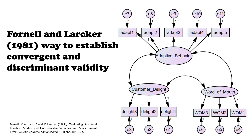Let's look at a simple example to give us some context when talking about discriminant validity. Let's say I had a simple model looking at adaptive behavior from a restaurant setting — did the server adapt their behavior to you, or did you feel like they did? Did that lead to customer delight, and did that delight lead to positive word of mouth — you're going to tell other people about the great experience you had?